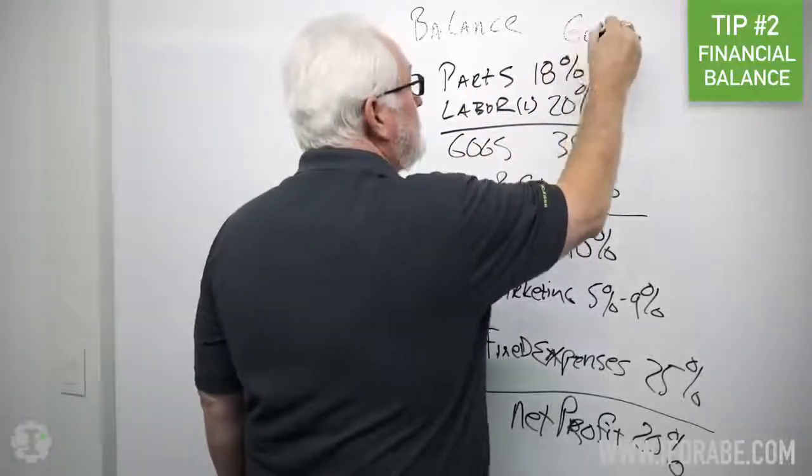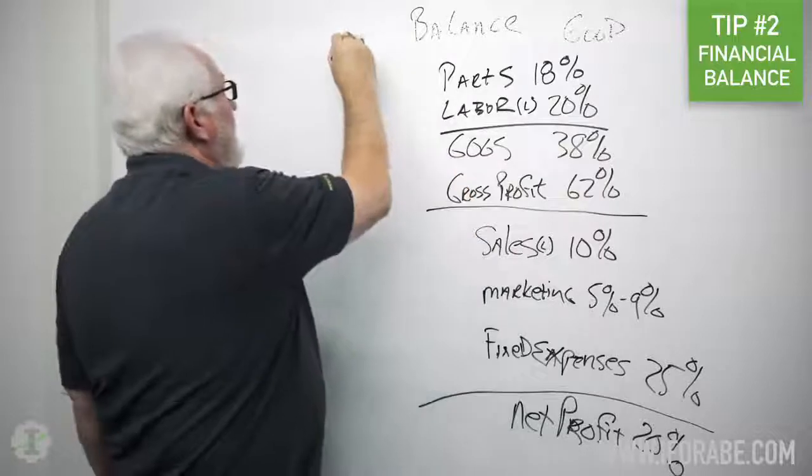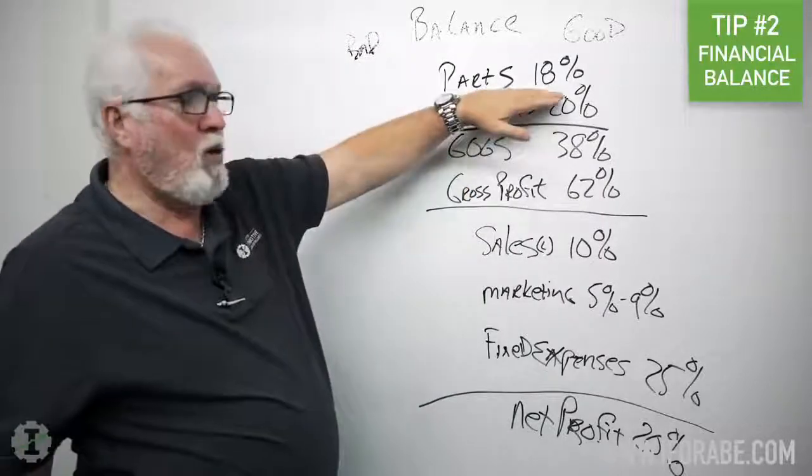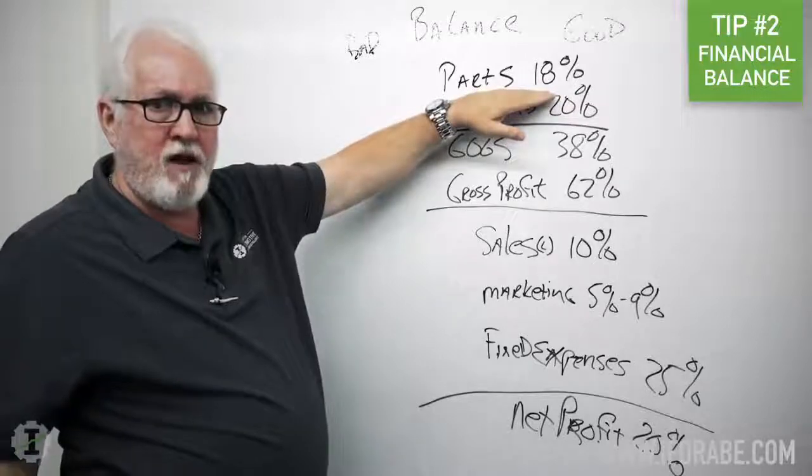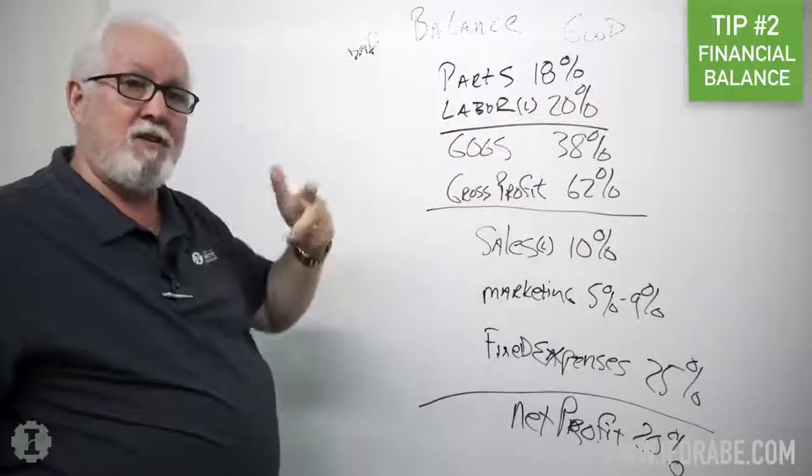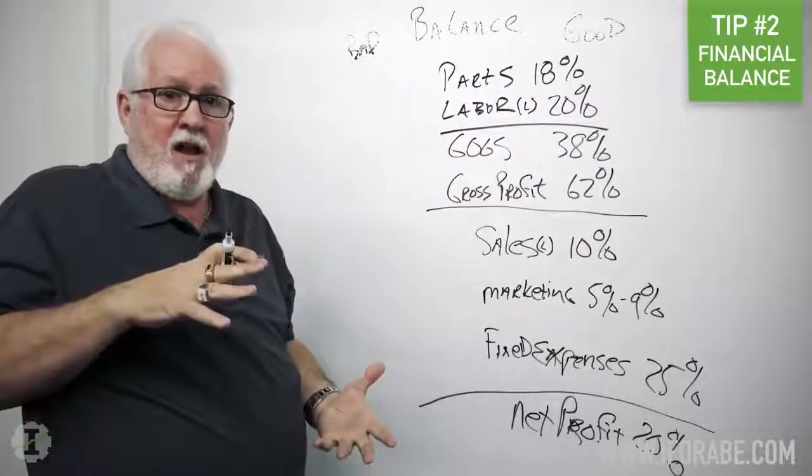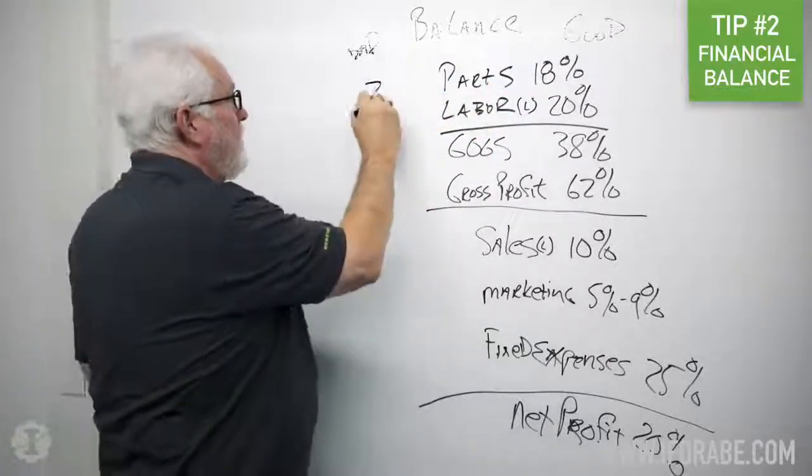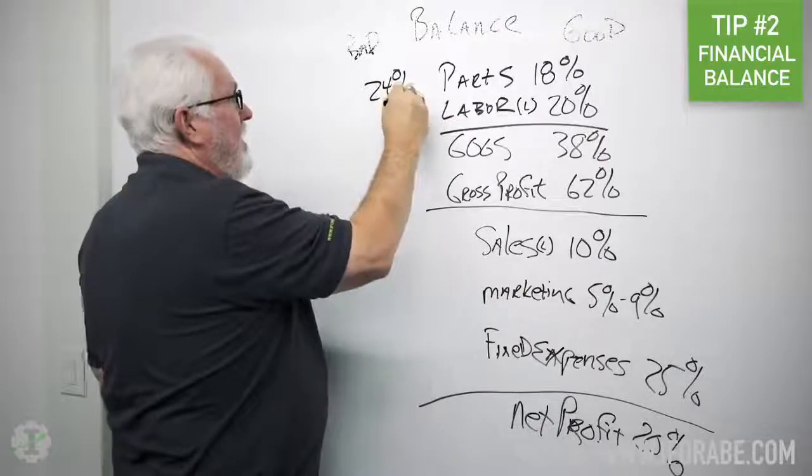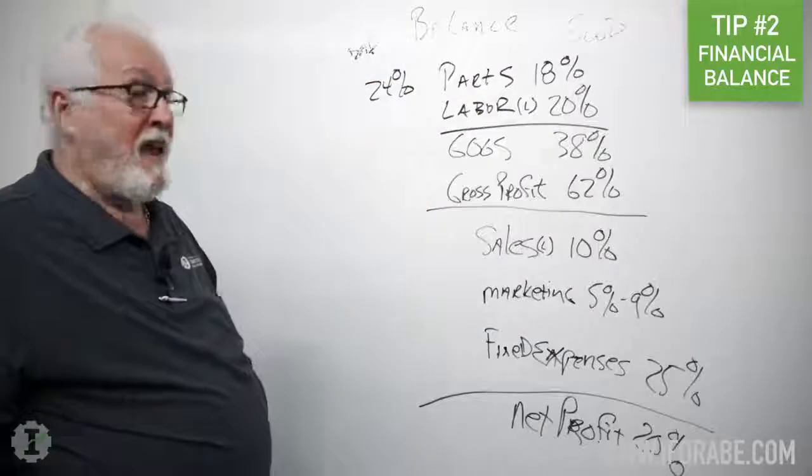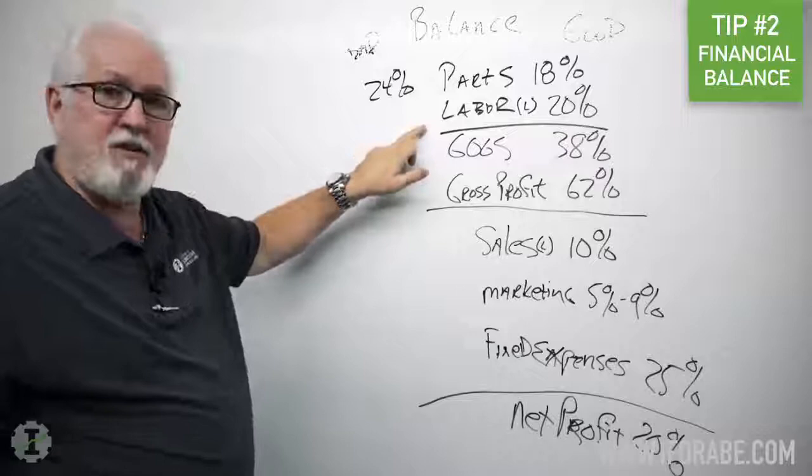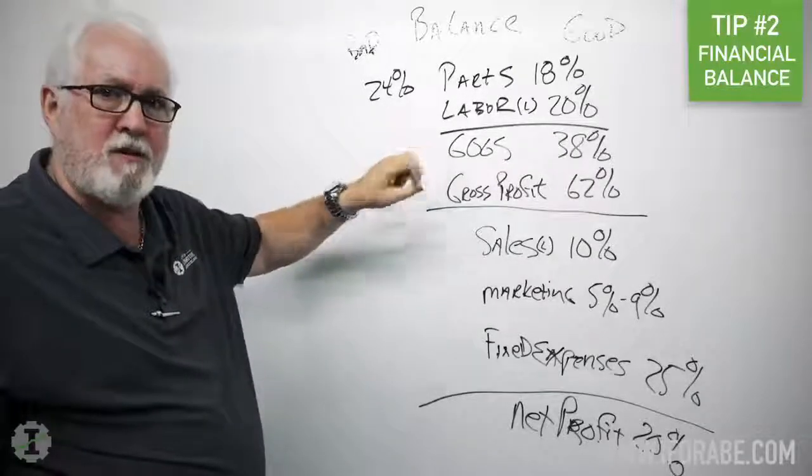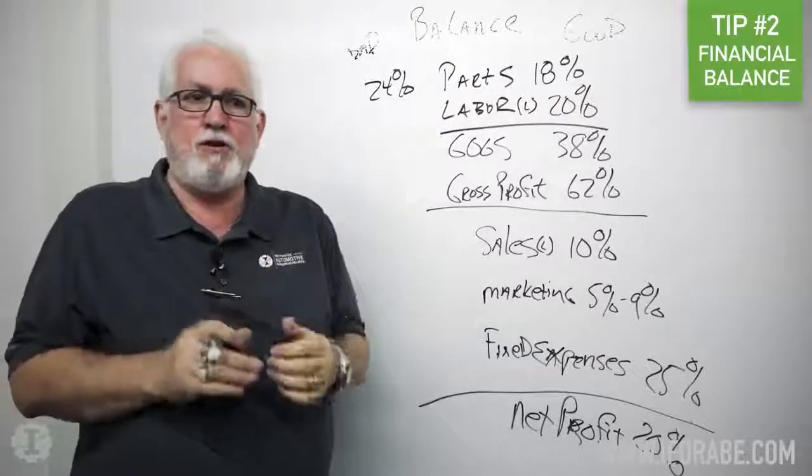Now over here we're gonna have bad. Now if I don't hold the line on my parts margins, then I'm not gonna sell as much, I won't have as much sales, and my parts cost will become a higher percentage. So now we have about 24% as a cost on our parts.